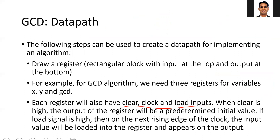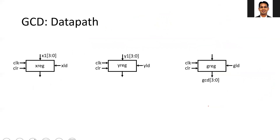When clear is high, the output of the register will be a predetermined initial value, say all zeros. If load is high, then on the next clock edge, the input value will be loaded inside the register. Otherwise, the value stored inside the register will remain available at the output. So these are the three registers for inputs x and y and one for output, with corresponding signals xld, yld, and zld. When xld equals one, on the next clock edge, the x1 value at the input is passed inside the x register.